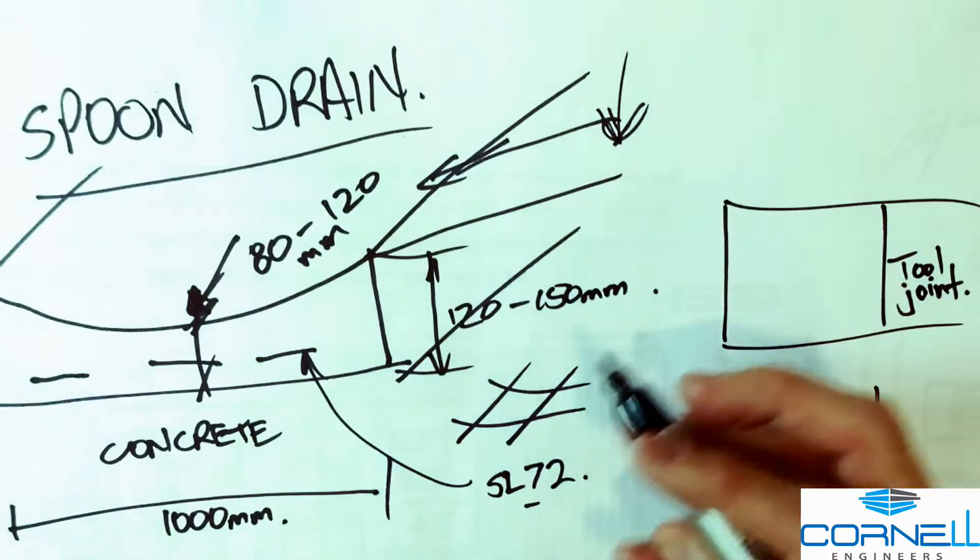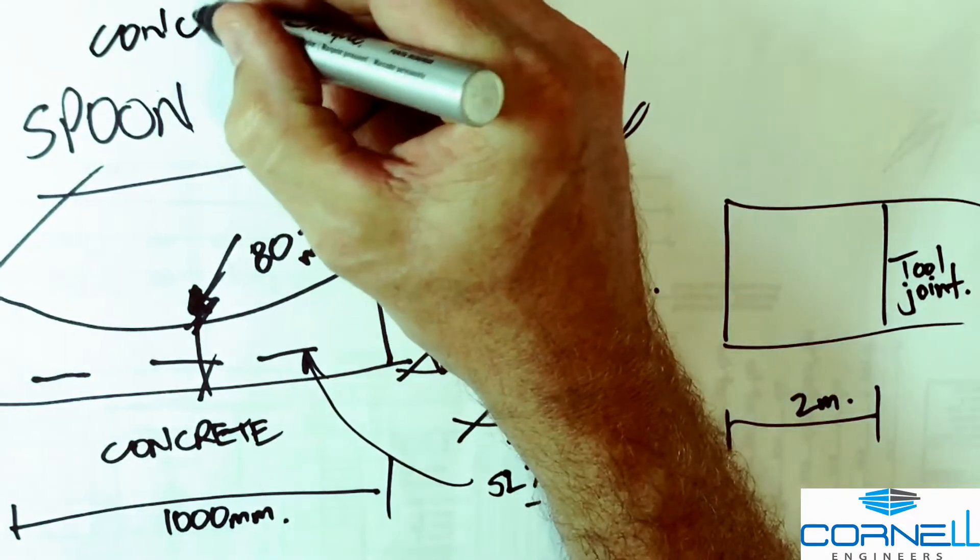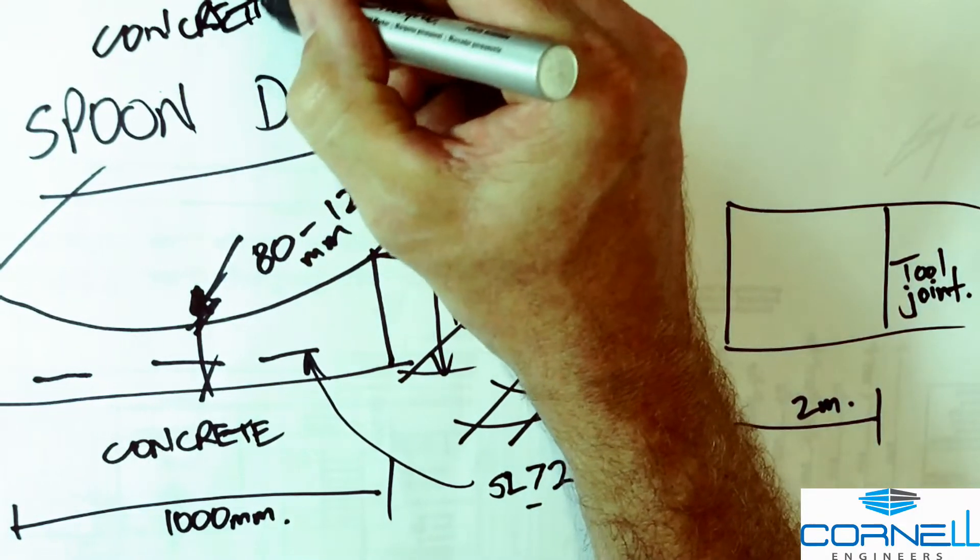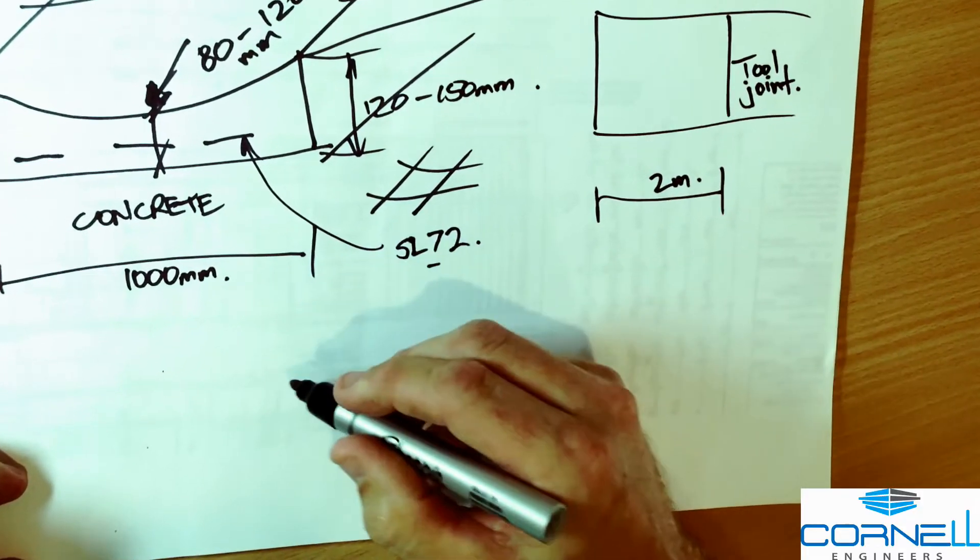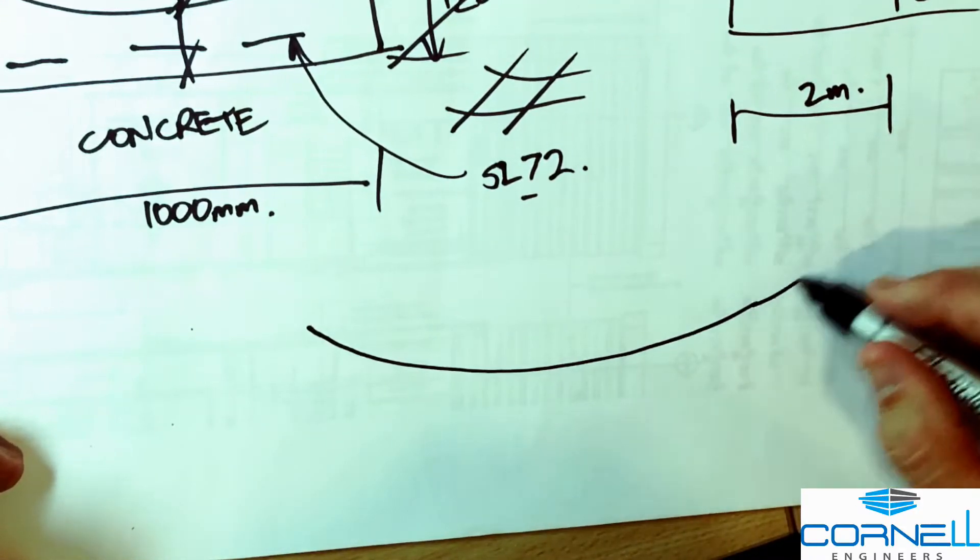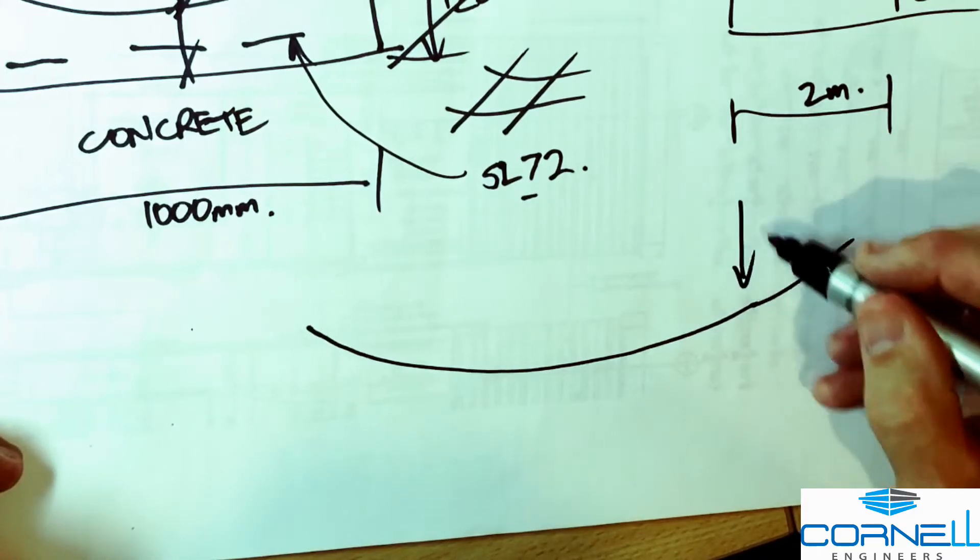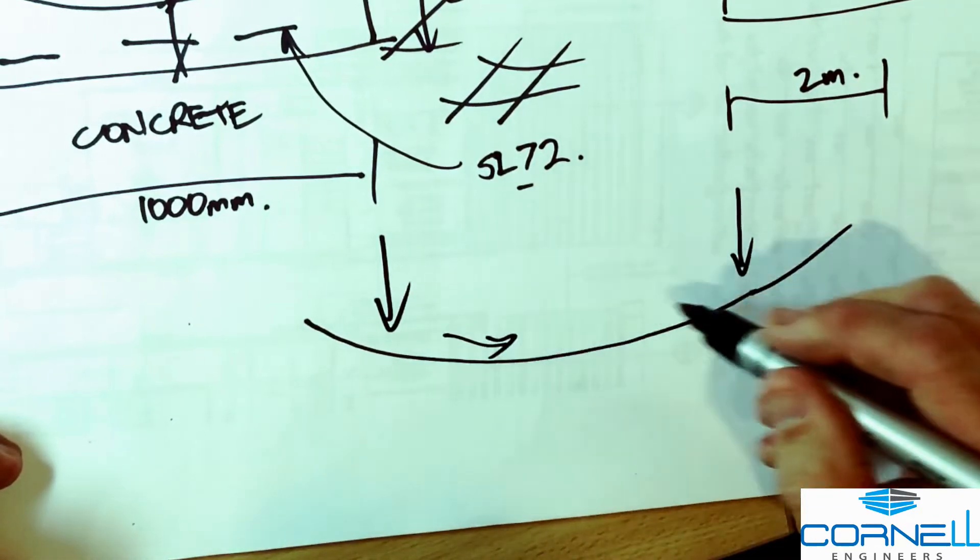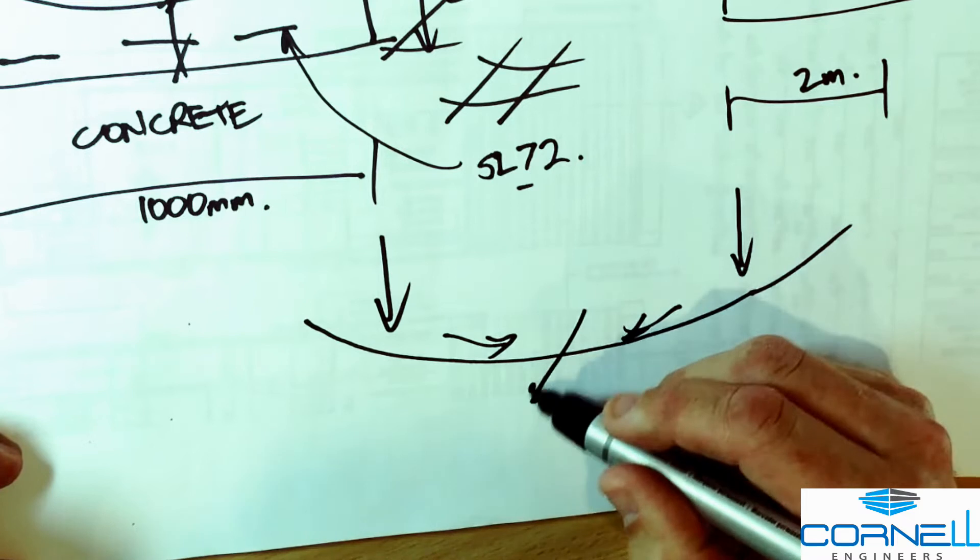So that's a concrete spoon drain, but sometimes we also specify a spoon drain just in the ground which is just a natural lie of the land where when it rains water falls to the middle and then can drain sideways.